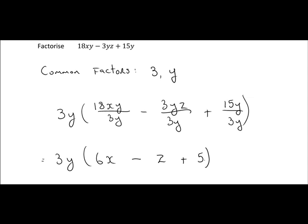If you wanted to check your answer to make sure it was right, you'd just multiply in the 3y again. So you'd multiply 3y by 6x, 3y by minus z, and 3y by 5. And you should end up with what you started with, so we'll just check that.